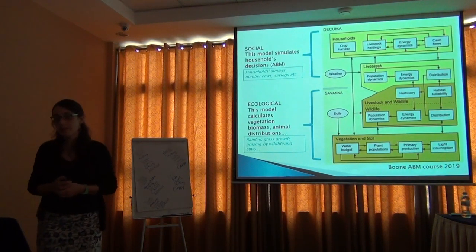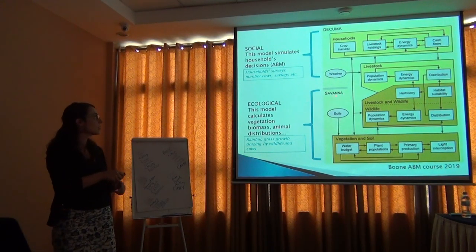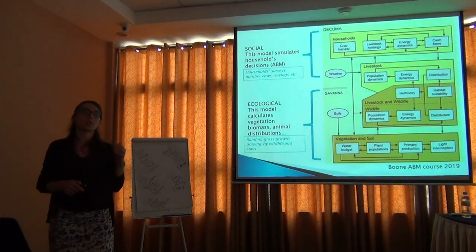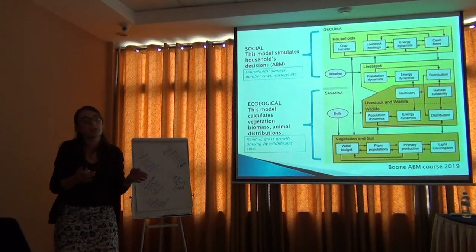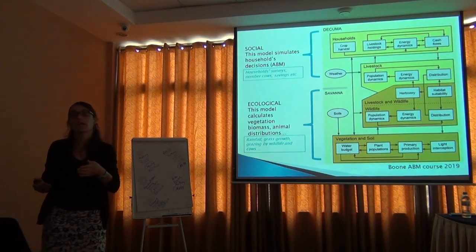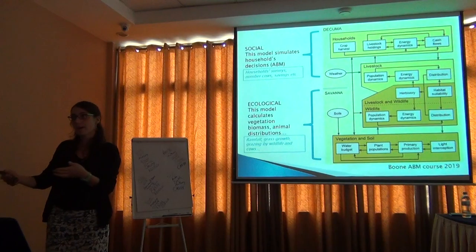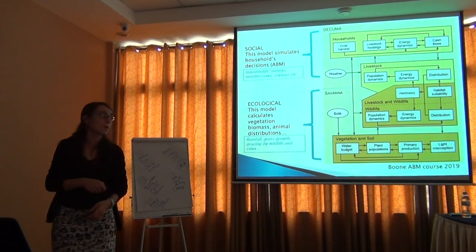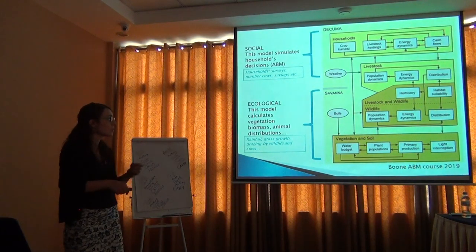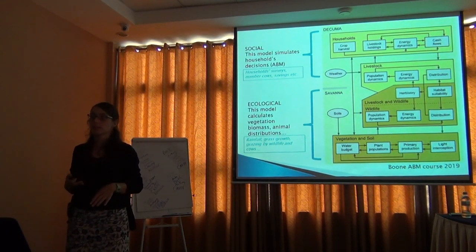They developed a very detailed model with two parts. The first part is called Savannah. They had detailed information on how fast certain types of grass grow given a given amount of rainfall, how much the zebra needs to eat, where they go, and what about the cows. The Savannah model was mostly focused on wildlife and livestock interaction with the environment and climate.